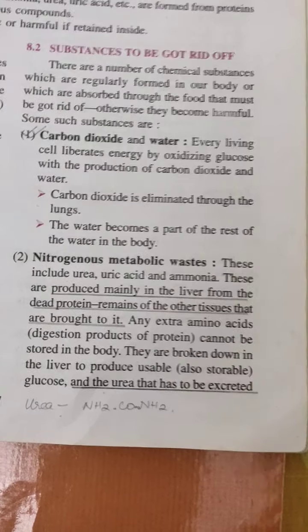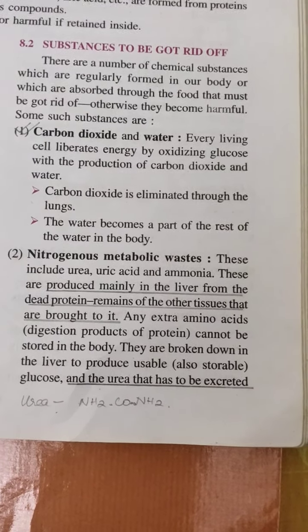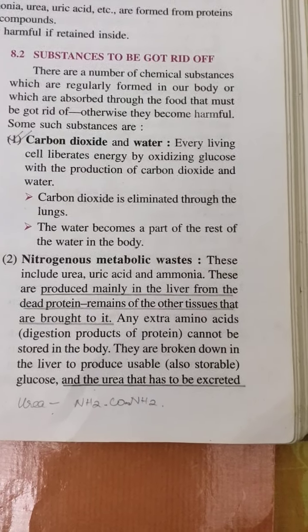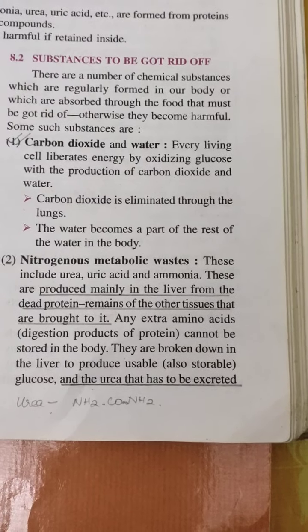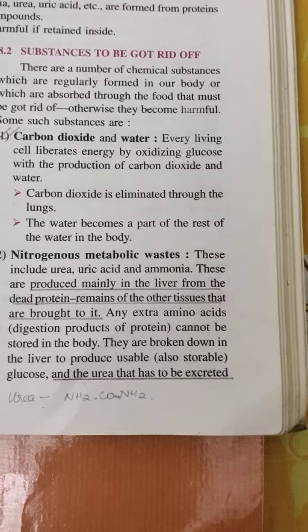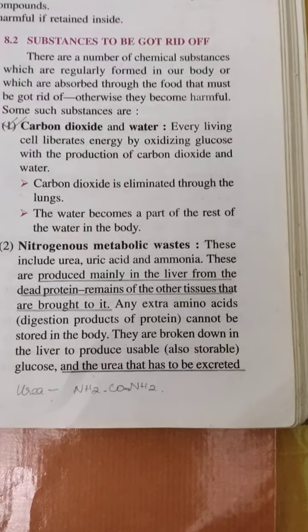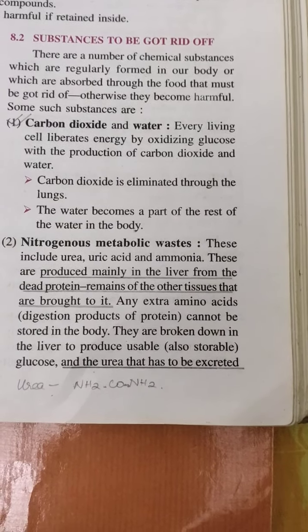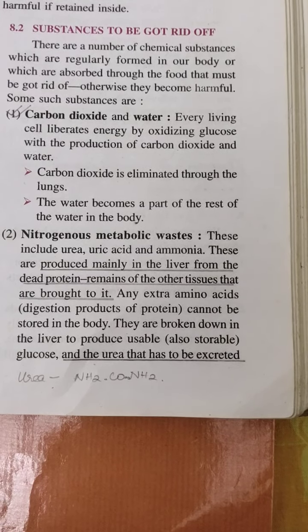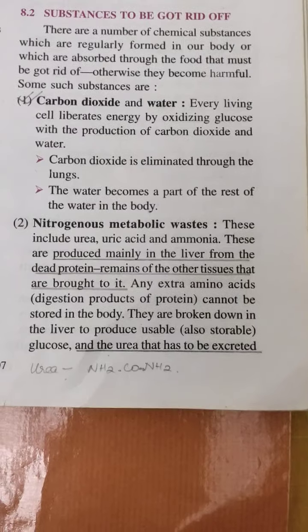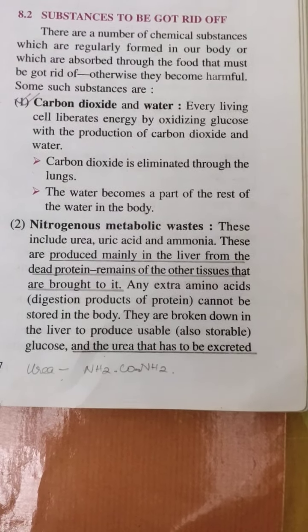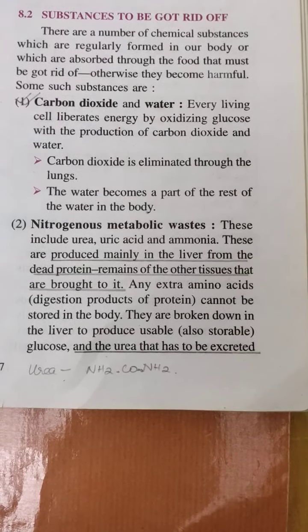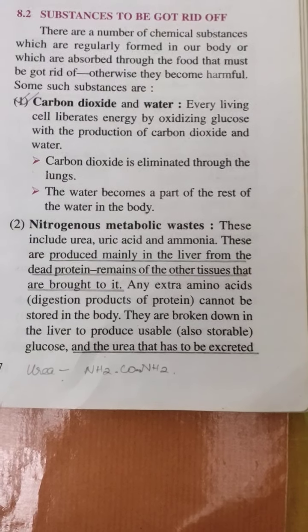Now, what are the substances which are removed from our body? First of all, carbon dioxide and water. Carbon dioxide is very harmful for our body, so it has to be eliminated, but it is eliminated through the lungs, not through the kidneys. Water becomes part of the rest of the water in the body, and excess water can be eliminated through urine and also through sweat, because water is needed in our body.